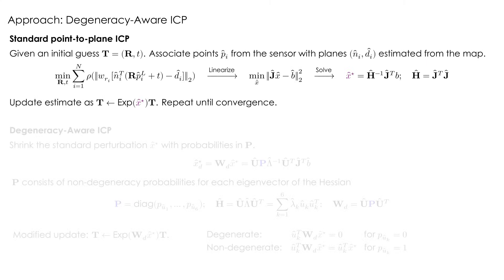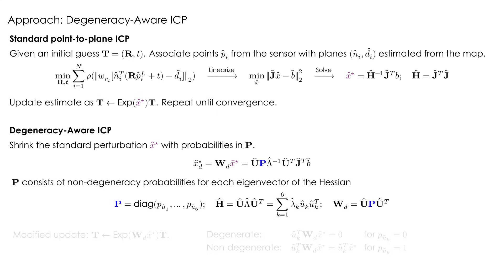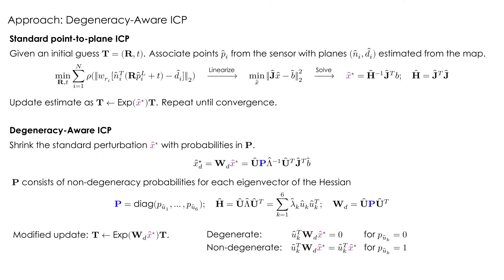To account for degeneracies in real-time LiDAR SLAM, we integrate the degeneracy detection in point-to-plane ICP for scan-to-map point registration. We modify the update step of the standard algorithm. We shrink the point-to-plane perturbation by using non-degeneracy probabilities computed for each of the eigenvectors of the Hessian. The degeneracy-aware perturbation is damped in degenerate directions, while non-degenerate directions are unaffected.